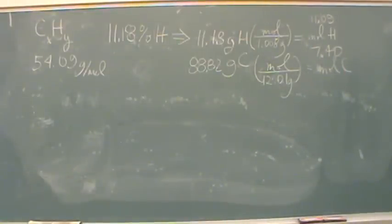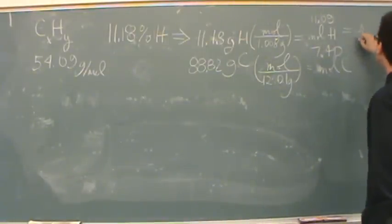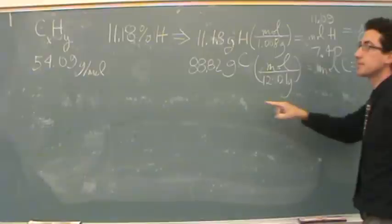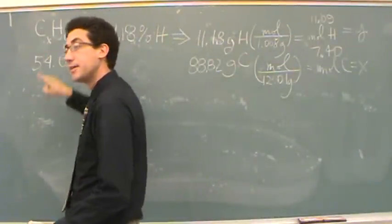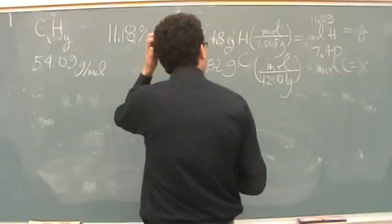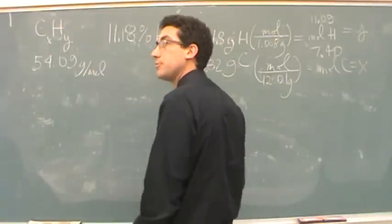So now I've got the moles. I've got on the top, Y, and on the bottom, X. From this X and Y over here. So far, so good? Okay, now I'm just going to divide by the smallest, which would be the 7.